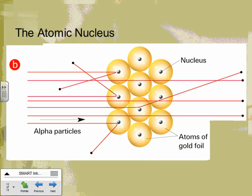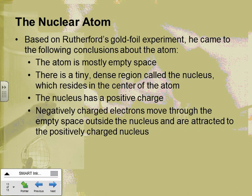This led Rutherford to the idea of the nucleus, which we're very familiar with now. Thompson was right about the atom being mostly empty space, but there is something in the middle — a dense region, tiny, in the center of the atom. So it's more like a cherry model: you've got the cherry, and then the seed in the middle — that's his nucleus.